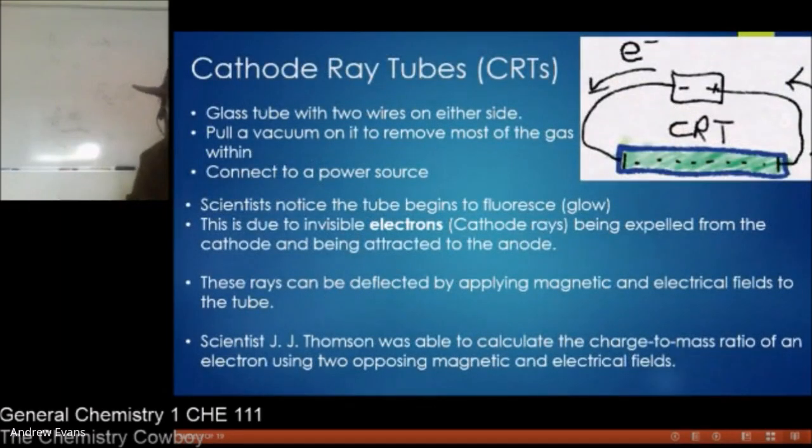So we have, first we have people inventing cathode ray tubes. You may have heard of these before, you may not have. A really old technology, we eventually used to apply it into TVs. But a cathode ray tube was simply a glass tube where we hook two wires through either end. We pull a heavy vacuum on this to empty out the tube of most of the gas particles, and then we connect it to a power source. So, the key thing, hopefully you remember, if a circuit is not complete, electricity will not flow.